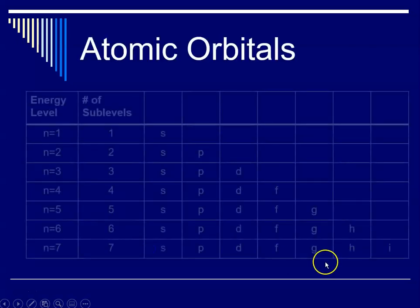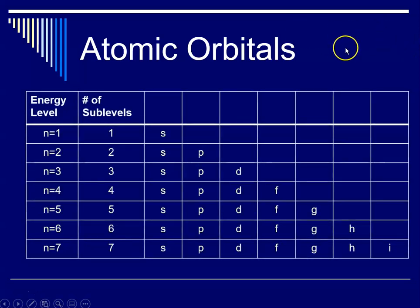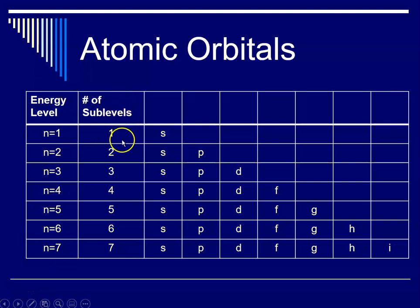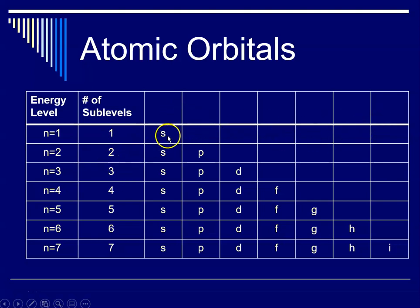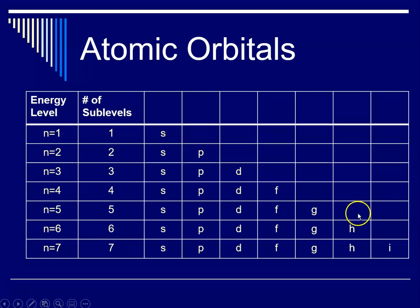Remember when we talked about orbitals and quantum numbers: we have energy levels numbered 1 through 7. That's the principal number, and each principal level has the same number of sublevels as its number — so 1 has 1, 2 has 2. The sublevels are named S, P, D, F, G, H, and I. The S sublevel has only one orbital, P has 3, D has 5, and so on.